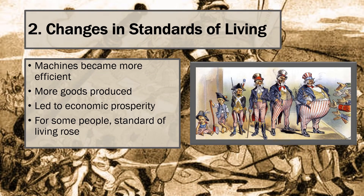Due to increased automation, the use of interchangeable parts, the division and specialization of labor, and the assembly line, the efficiency of industrial production increased. This efficiency led to greater output, especially of consumer goods such as textiles, home furnishings, clothing, and porcelain. As the supply of consumer goods increased, the availability of goods rose and the prices fell. In addition, increased global industrial production led to greater competition and variety of both consumer and capital goods. For some people, standards of living improved with the proliferation of consumer goods.